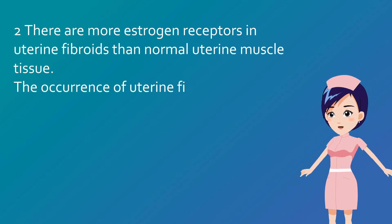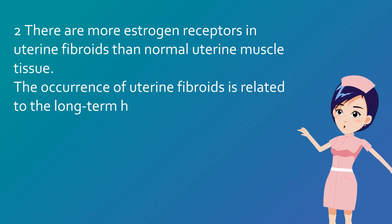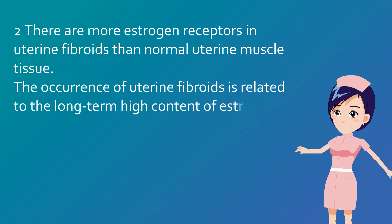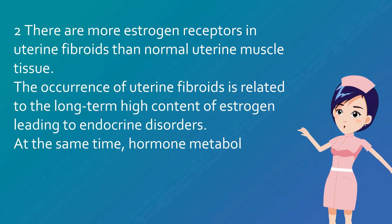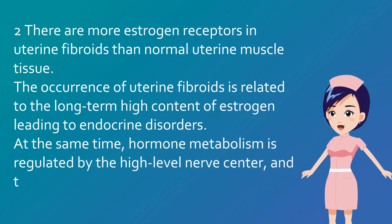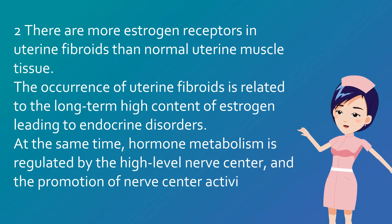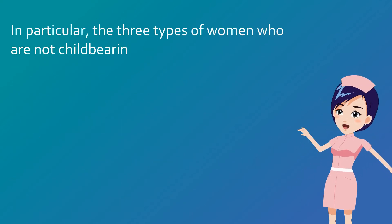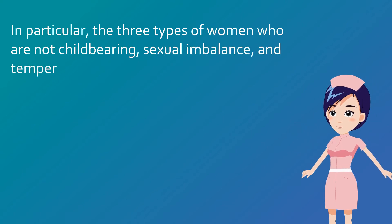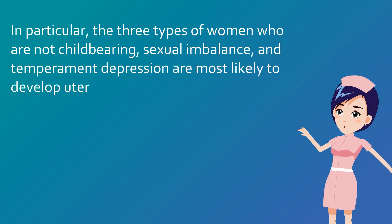Uterine fibroids have more estrogen receptors than normal uterine muscle tissue. Their occurrence is related to long-term high estrogen levels leading to endocrine disorders. Hormone metabolism is also regulated by higher nerve centers. Women who are not childbearing, have sexual imbalance, or temperament depression are most likely to develop uterine fibroids.